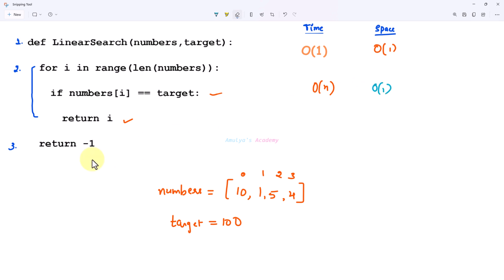So now let's move on to the last block, return minus 1. Here we are returning some value if target is not found in the list then we will return this message. So time complexity is big O of 1 constant time operation, we are returning the value so constant time also constant space.